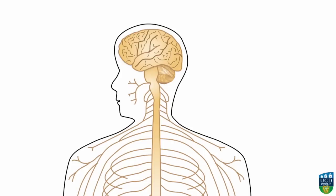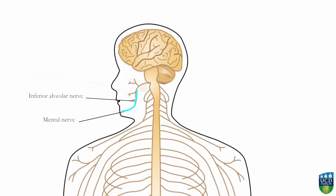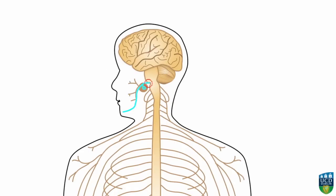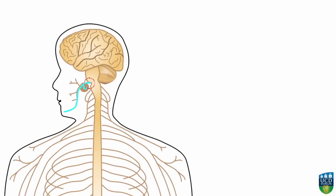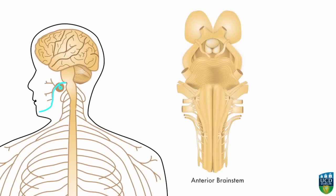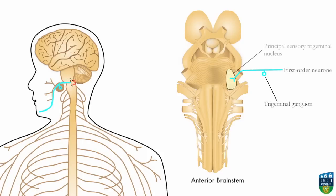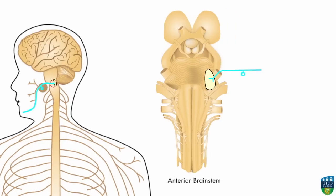In this case, the impulse travels via the first order neuron from the chin through branches of the mandibular nerve to reach the brainstem via the trigeminal nerve. The first order neuron carries the impulse into the brainstem and travels to the primary sensory trigeminal nucleus.